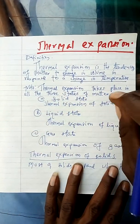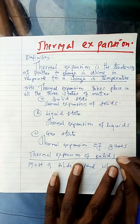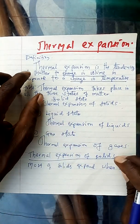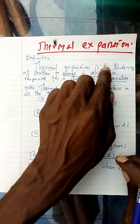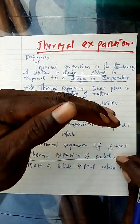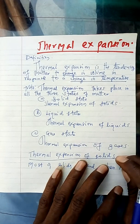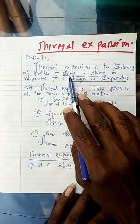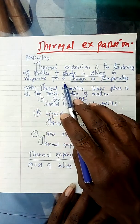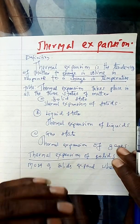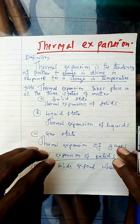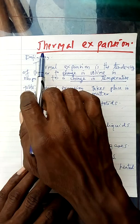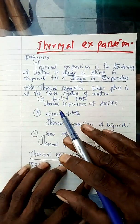Whenever you are increasing the temperature you are changing the volume, and whenever you are decreasing the temperature you are changing the volume. But because we are talking about expansion, we are talking about increasing the volume. There must be a change in temperature — in absence of a change in temperature there is no change in volume. Because of thermal expansion, we are talking about rising temperature.